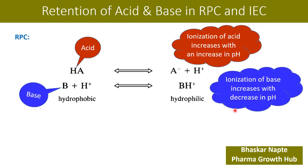The ionization of a base increases with a decrease in pH — meaning when the pH moves from the alkaline side to the acidic side, basic substances undergo ionization under acidic pH. Conversely, acidic substances undergo ionization in alkaline pH. As long as the acid stays unionized or the base stays unionized, they are hydrophobic in nature; once they undergo ionization they become hydrophilic.